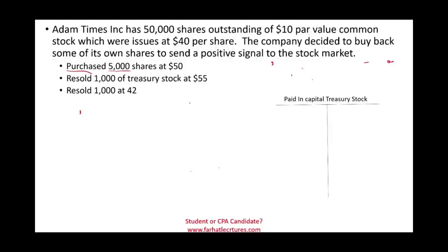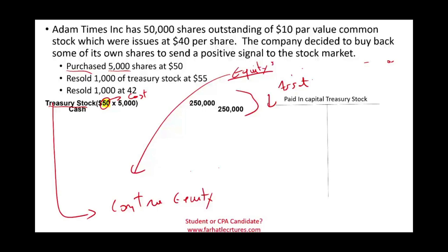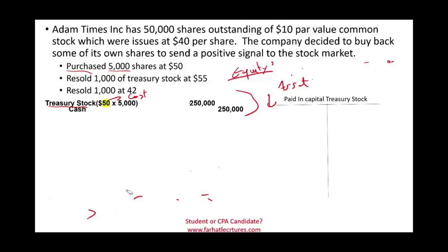We purchased 5,000 shares at $50 — Adam went to the market and bought back 10% of their shares. We pay $250,000, so we credit cash and debit an account called treasury stock for $250,000. Treasury stock is a contra equity account. Assets went down because we paid cash, and equity went down because we added a contra equity. So we debit treasury stock and credit cash.